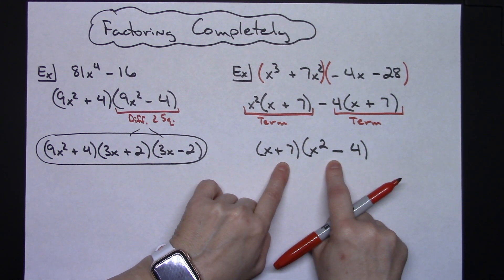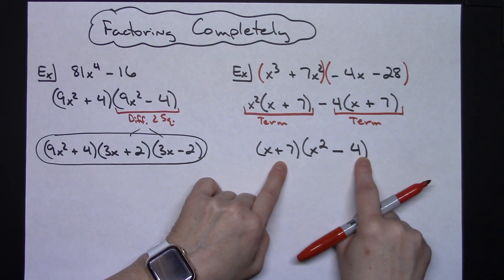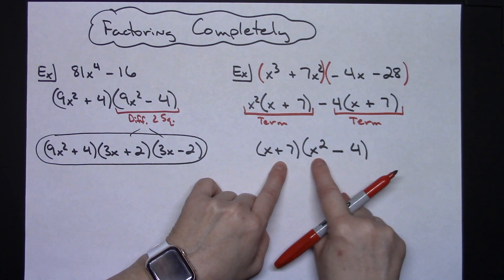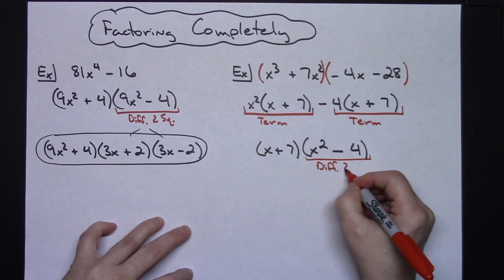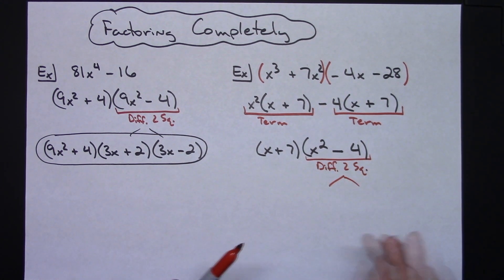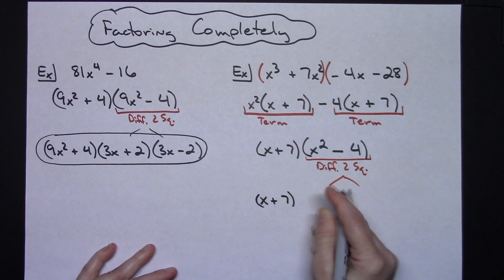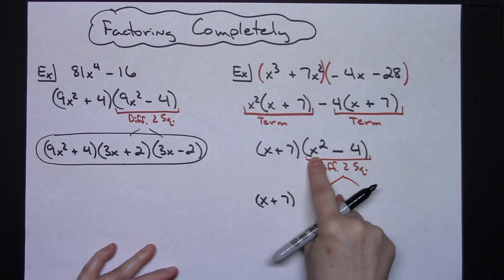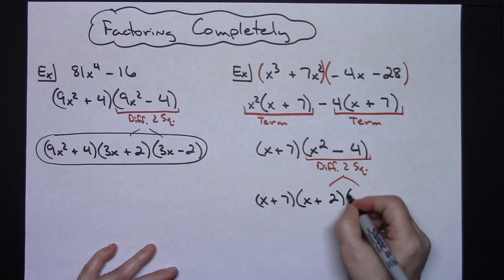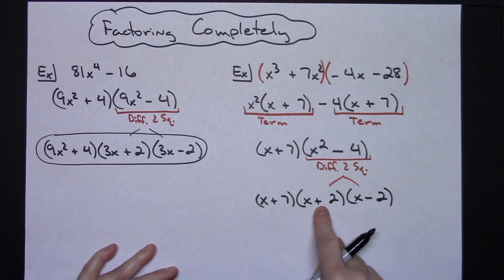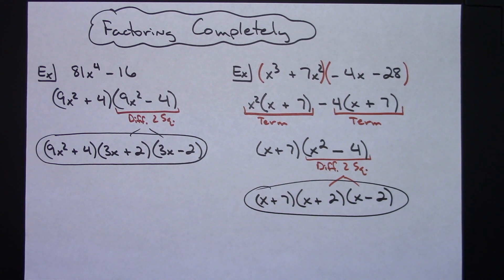Now I need to make sure I've factored completely. The first factor (x + 7) has a plus sign — I cannot do anything with that. But (x² - 4) has two terms and a minus sign, and it turns out to be a difference of two squares. The square root of x² is x and the square root of 4 is 2, so it factors into (x + 2)(x - 2). Checking everything again, there is nothing else to factor.